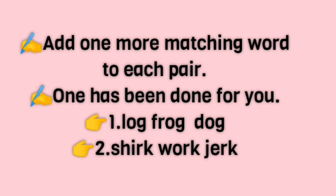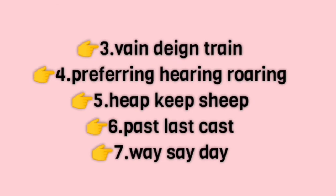Third pair: vein, drain — drain means to do something unwillingly. Fourth pair: preferring, hearing, roaring — roaring means the noise of wild animals like lion, tiger, etc. Fifth pair: heap, keep, sheep — sheep is a domestic animal reared for wool and meat. Sixth pair: past, lost, cast — cast is a noun meaning the actors in a film, play, or show.